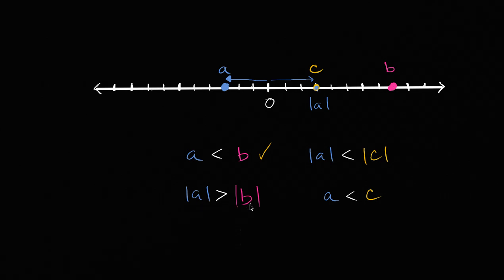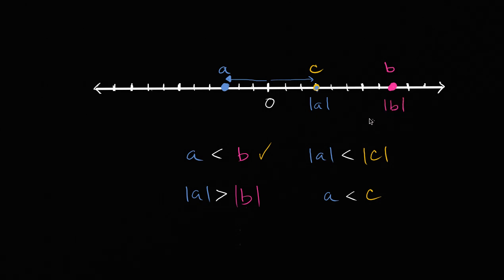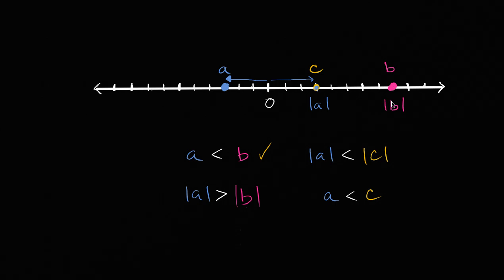So is the absolute value of A greater than the absolute value of B? What's the absolute value of B? B is eight hash marks to the right of zero. So the absolute value of B is on the eighth hash mark. Absolute value of a positive number is just that number again; absolute value of a negative number is the opposite of that number; and absolute value of zero is zero. So the absolute value of A is to the left of the absolute value of B — it is less than it. So this statement is not true.